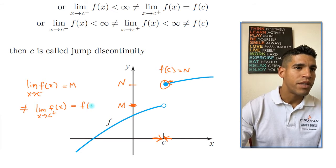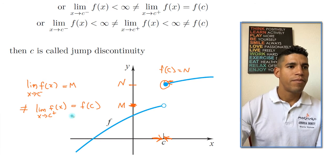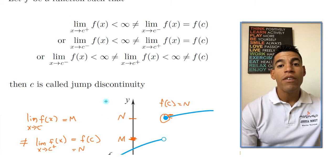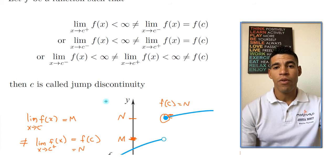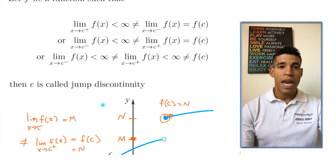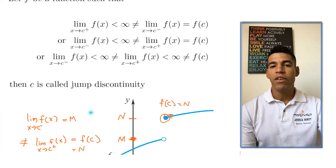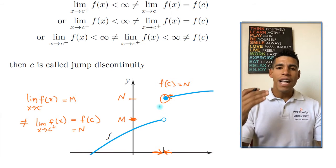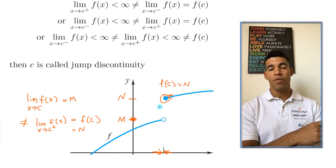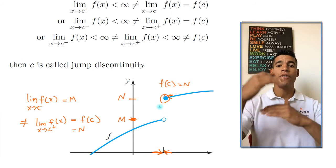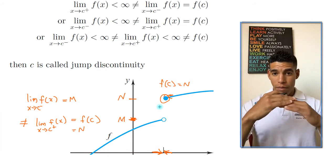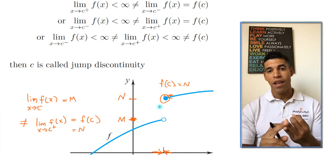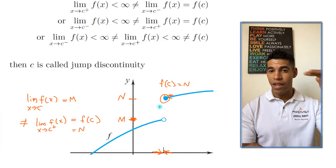That is the definition of a jump discontinuity. Just like I said in the previous video, names are very important in math — jump discontinuity tells you there's a jump, a break between the functions. That's the first type of essential discontinuity. Notice that the limits are not the same, and there is a breakage. That breaking makes it first a discontinuity, second an essential discontinuity, and third a jump discontinuity — that's the hierarchy.